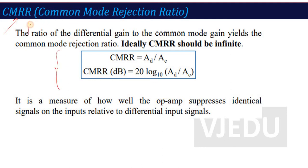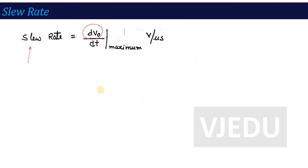Similarly, just as CMRR is important, there is another important characteristic called the slew rate. It is defined as the rate of change of output voltage with respect to time. In other words, it measures how quickly the output voltage changes with respect to the change in input voltage. When you change the input voltage, the output voltage should reflect and amplify that change accordingly. That parameter which measures this relation is called the slew rate.